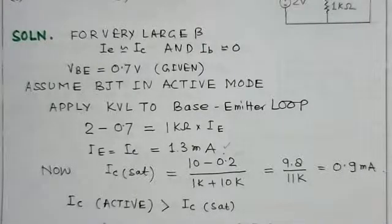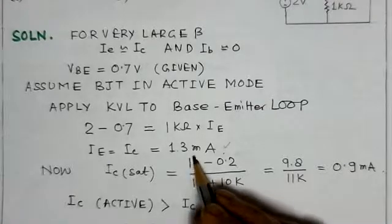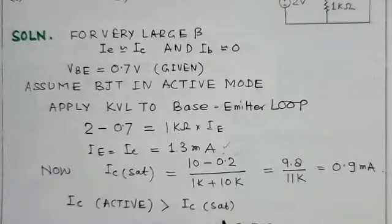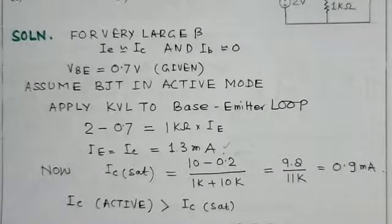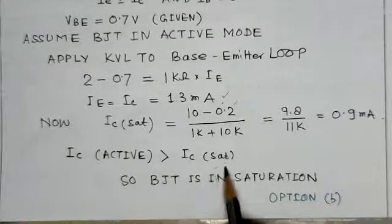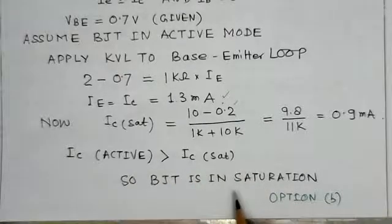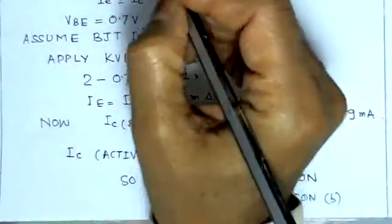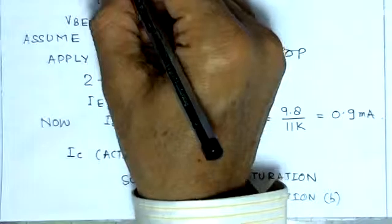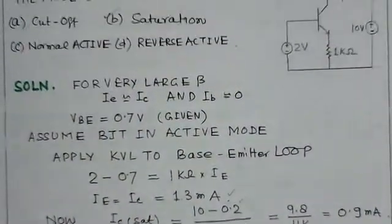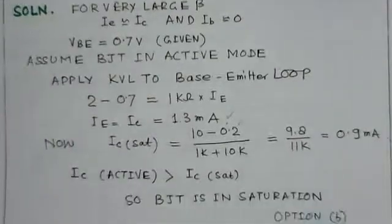IC saturation is 0.9 milliamperes, while IC active is 1.3 milliamperes. That means IC active is greater than IC saturation, which means the transistor is in saturation, since the collector current is larger than the saturation value of the current. So BJT is in saturation, option B.